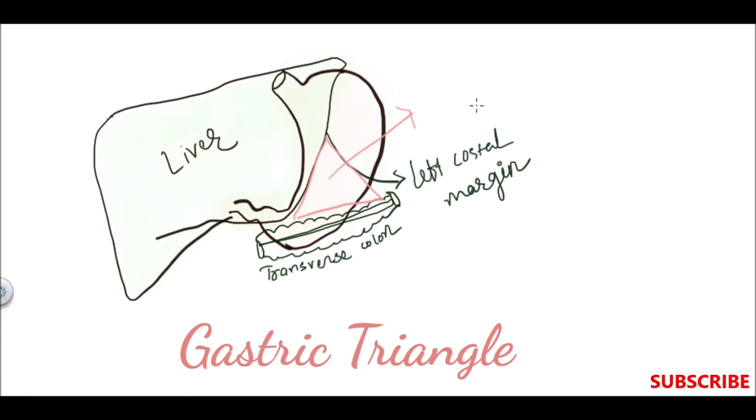This space is directly related with the anterior abdominal wall. It is known as the gastric triangle and it is helpful in the gastrostomy operation for feeding the patient. So this is the gastric triangle.